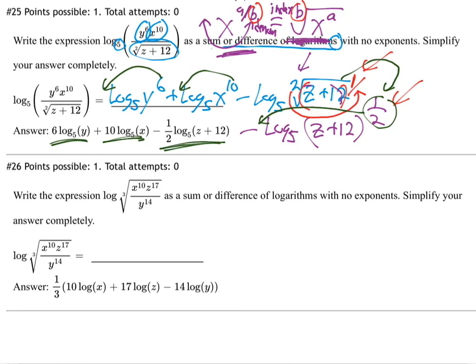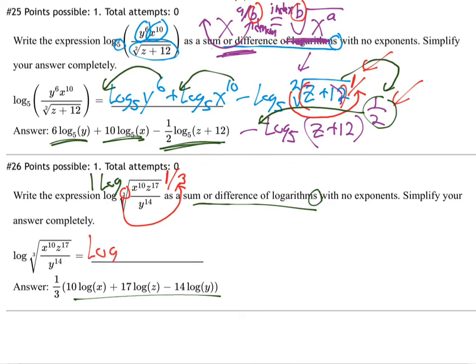Number 26: again going from one log to many logs — sum or difference of logarithms. There's a cube root here. The cube root has an invisible 1 power that swings back to become a one-third power. So it becomes log of (x to the tenth times z to the seventeenth, over y to the fourteenth) all to the one-third power. You can always switch between fractional powers and roots.